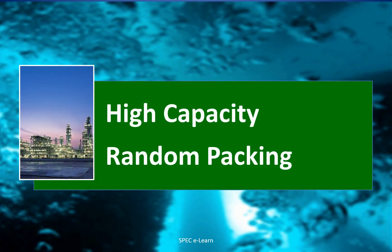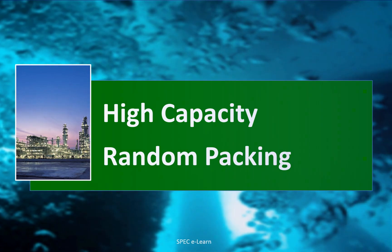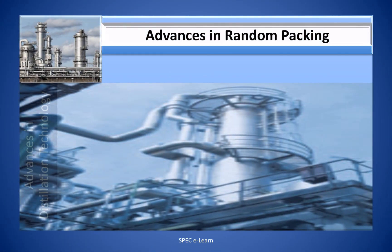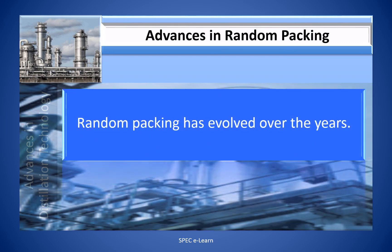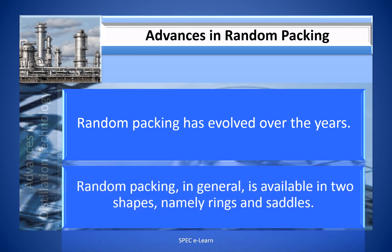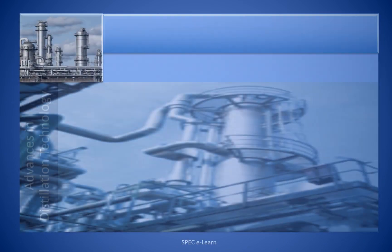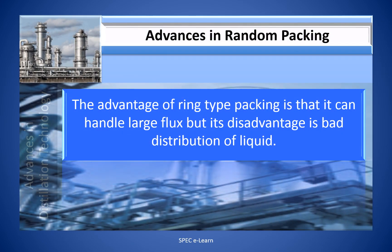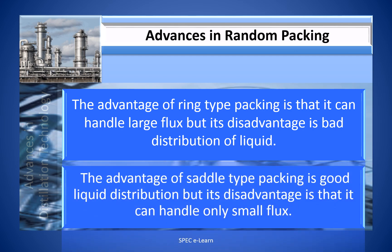High-capacity random packing is an advanced packing technology widely used in existing distillation columns in refineries and petrochemical plants to enhance column capacity during plant expansion. It is also used for new plant designs where column size and investment can be reduced. Random packing in general is available in two shapes — rings and saddles. The advantage of ring-type packing is that it can handle larger flux, but its disadvantage is bad liquid distribution. The advantage of saddle-type packing is good liquid distribution, but it can handle only small flux.